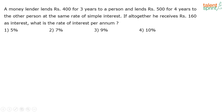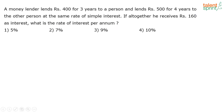Next question — this is on simple interest. A money lender lends rupees 400 for three years to a person and lends rupees 500 for four years to another person at the same rate of simple interest. If altogether he receives rupees 160 as interest, what is the rate of interest per annum? Another straightforward one — you just have to play with the numbers.